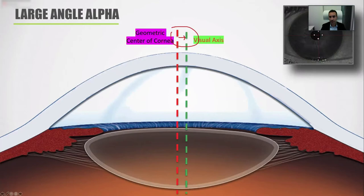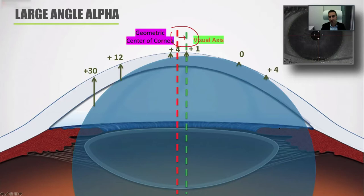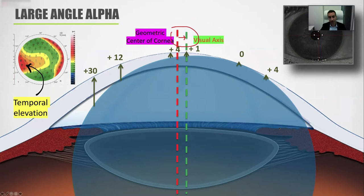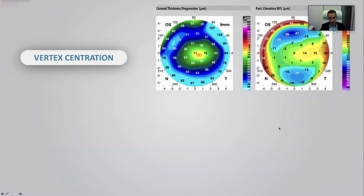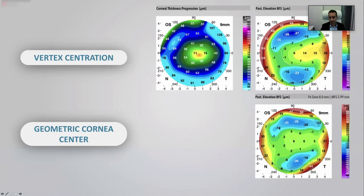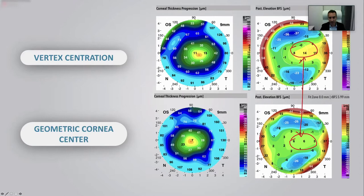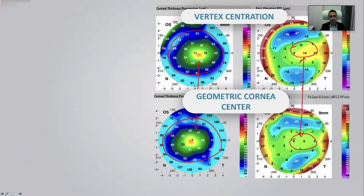This represents what we typically see on these corneas — a temporally elevated BFS — since most corneal vertices are actually nasal to the geometric center. Would temporal elevation be keratoconus or angle alpha? Looking at the maps: vertex centration versus geometric centration shows a major change in the BFS, but not much change in the thickness progression. The thinnest point does shift, but the relationship of surrounding points based on the thinnest point does not. This confirms that the thickness progression is independent of fixation, and we don't have the same bias as with the BFS.